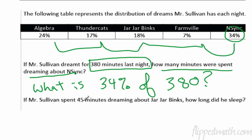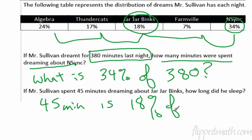How about the next one? If he spent 45 minutes dreaming about Jar Jar Binks, how long did he sleep? So 45 minutes here, we have 45 minutes is Jar Jar Binks. Where's Jar Jar? 18%. Hey, 18% of what number? Okay. That's what we want to know there. 45 minutes is 18% of what number? So here are two different problems that you, again, just write a simpler problem. And then these are easy to solve using is over of, percent over 100. Solve both of these. Pause the video. Solve both of these. Go.